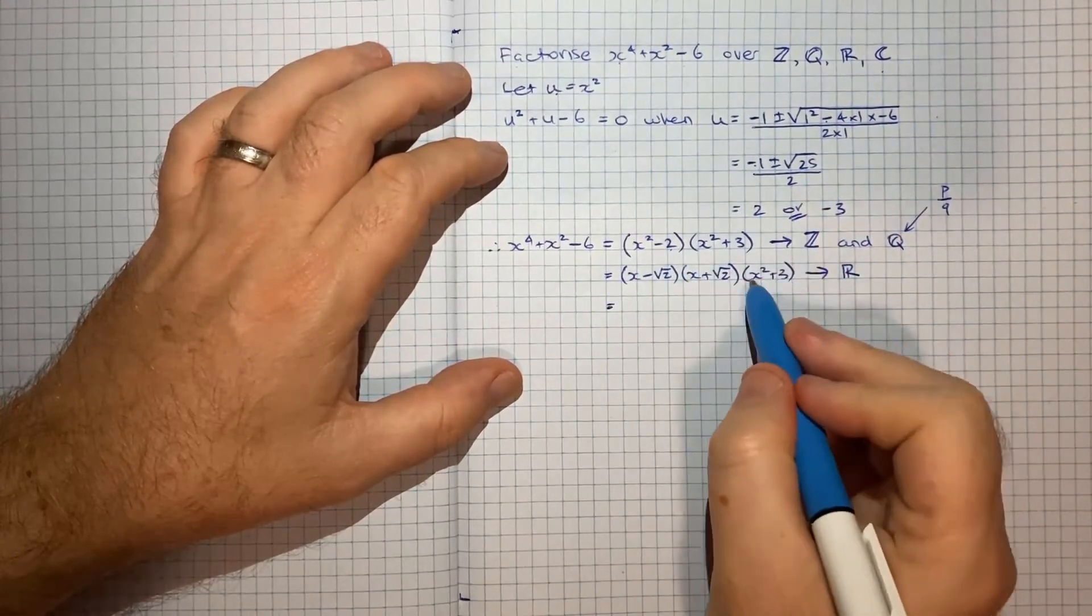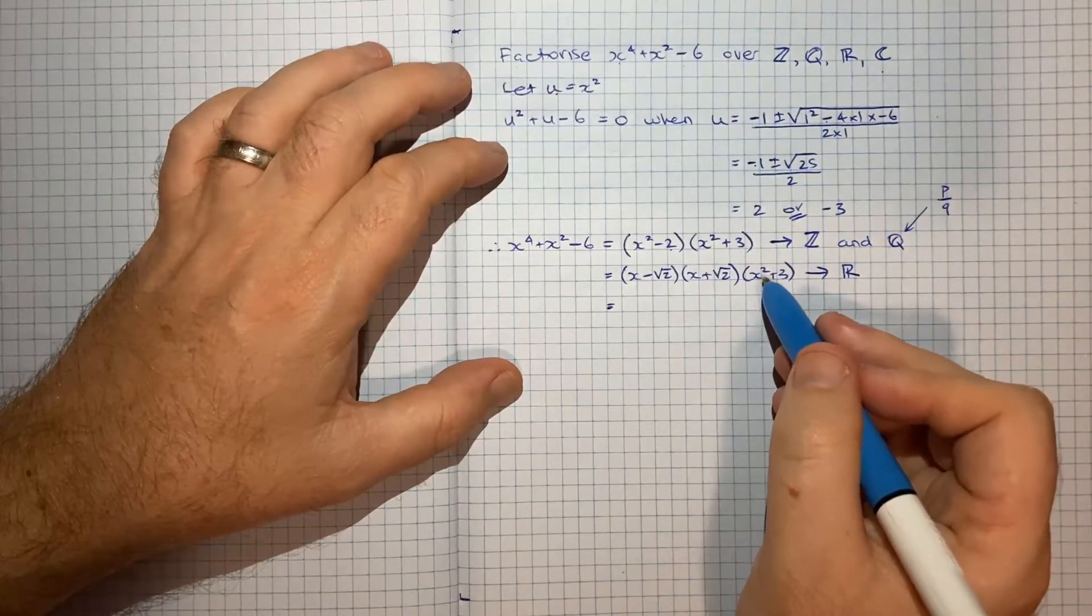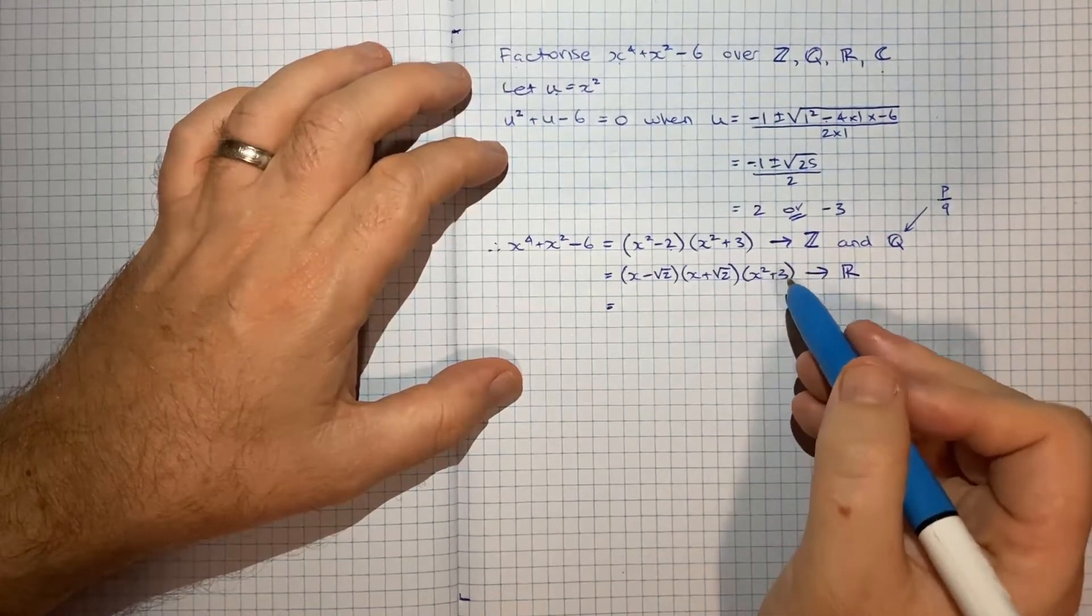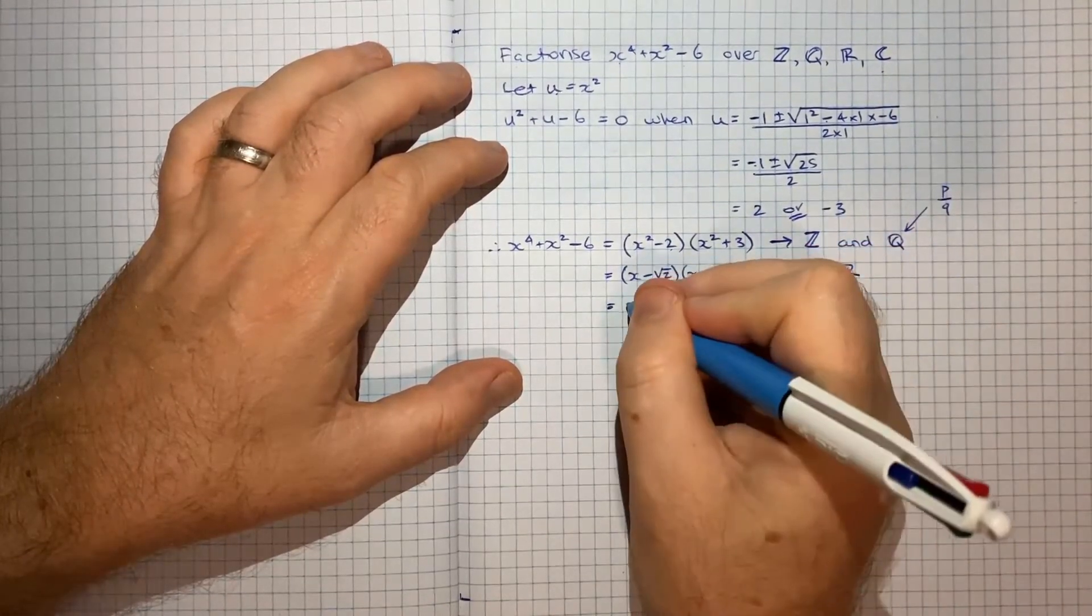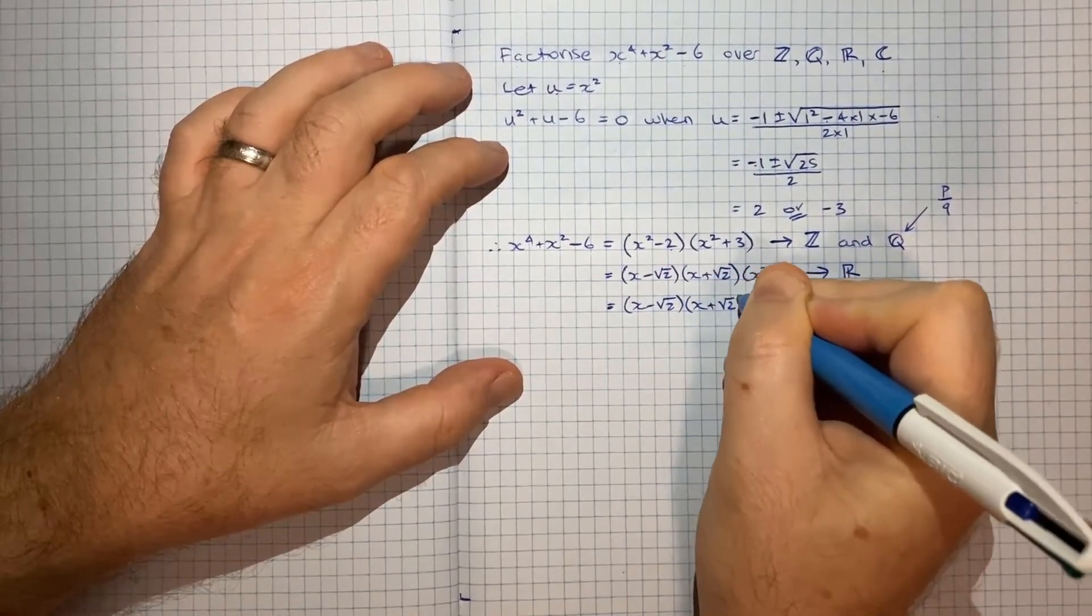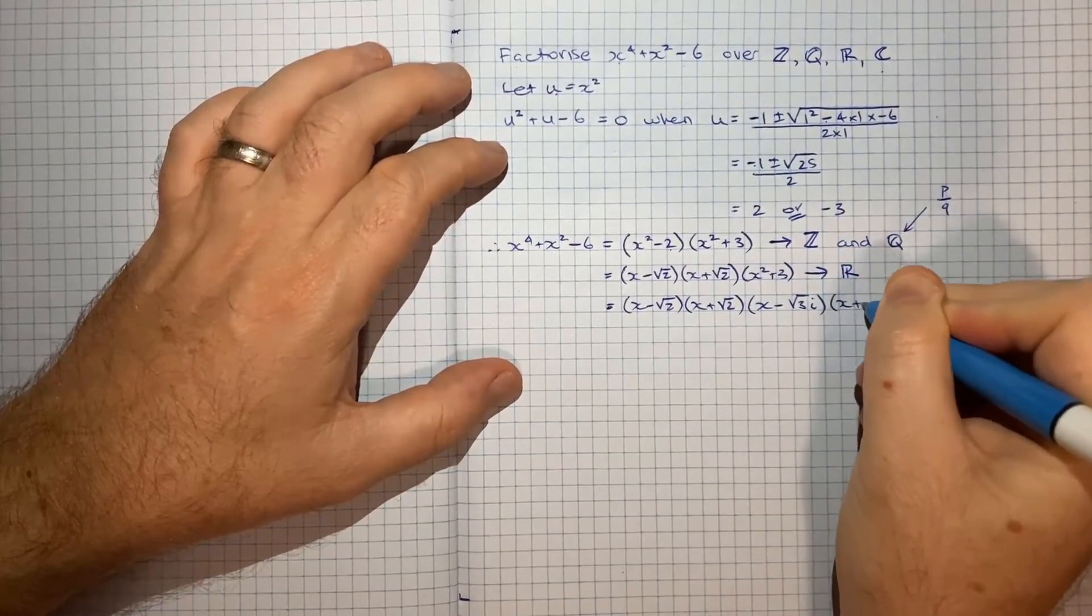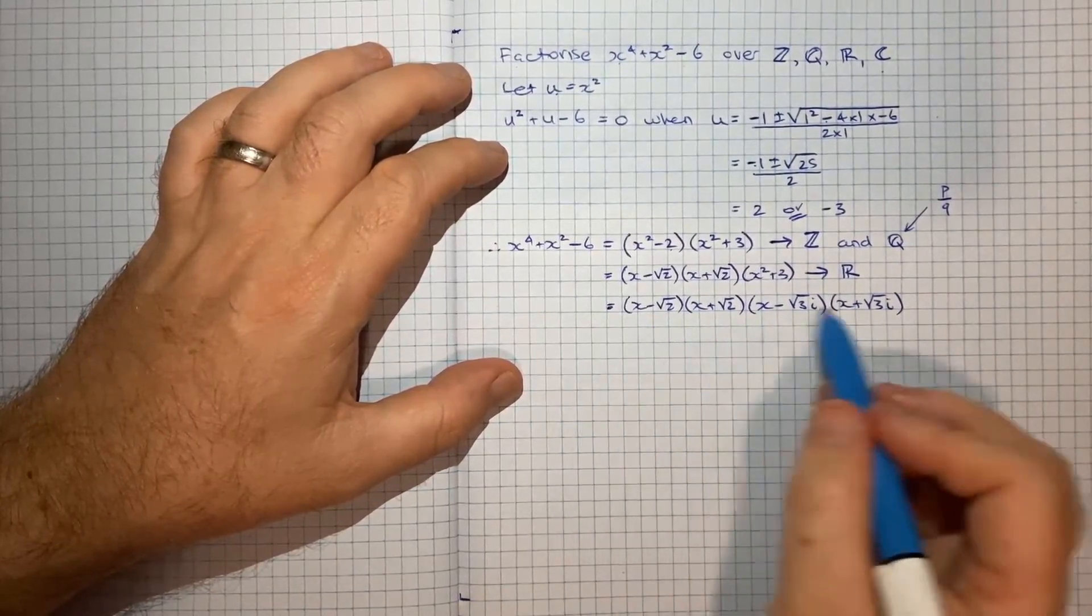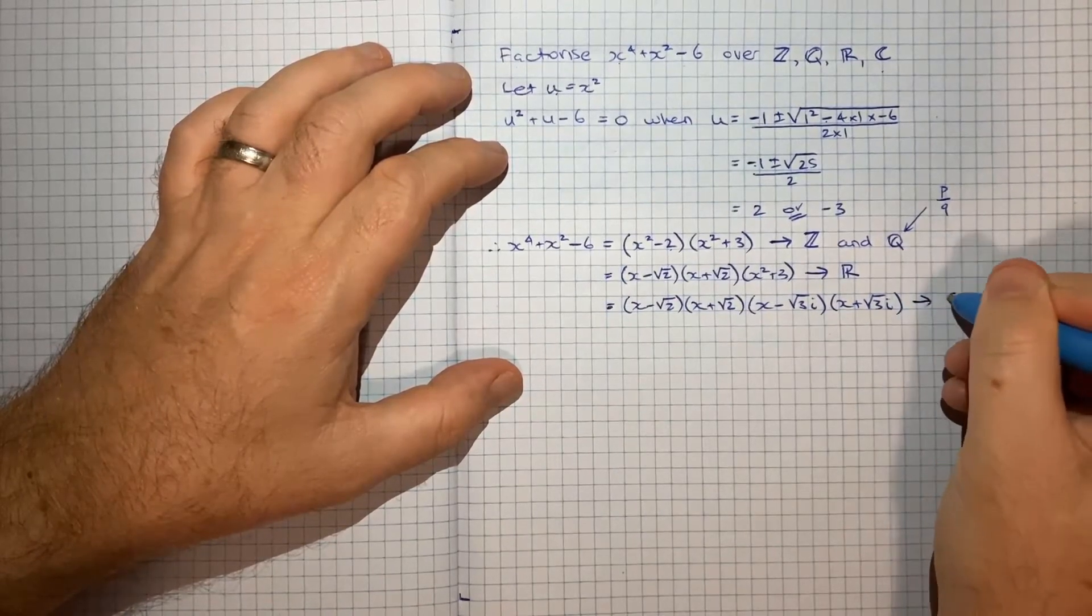And then if we want to expand this x squared plus 3 further, you'll get x squared plus 3 is equal to 0 when x squared is equal to negative 3. So x will be plus or minus root negative 3, and that's how we get into our complex space. So you'll get x minus root 2, x plus root 2, x minus root 3 i, x plus root 3 i. And again, if you were to expand all of this, you should still get back to the original expression.